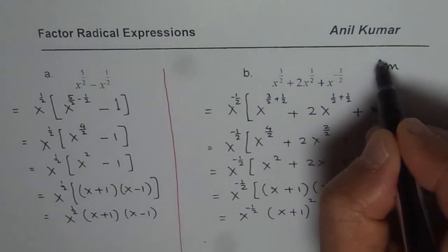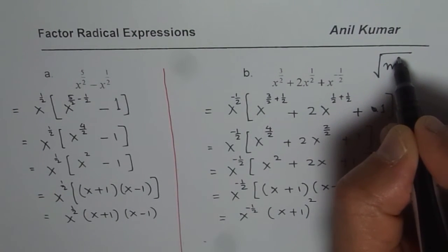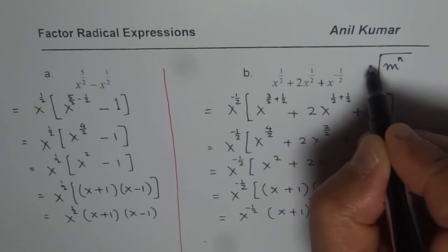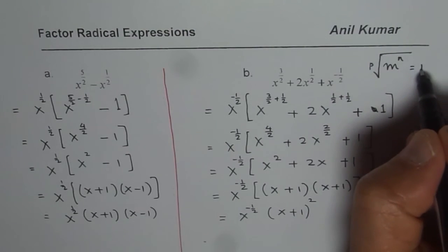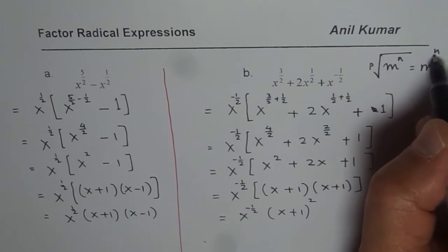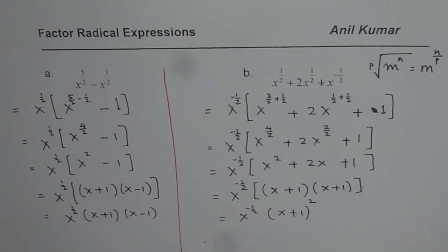In general, we say radical could be written as n over p. So that is equal to m to the power of n over p. So that is how the radicals are written. So I hope that makes it clear. If still there are some doubts, let me know. Thank you and all the best.